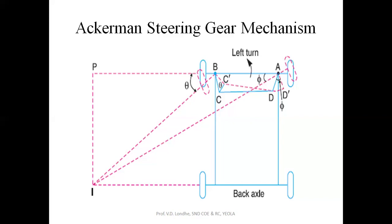The basic condition of the steering gear system for proper turning and to avoid skidding is the same: both center lines of the front and rear axle wheels should meet at one common point. If this does not happen, the vehicle will skid or be thrown outside the track — it will leave the track. This is the positive point of the Ackermann steering gear mechanism system as compared to the Davis steering gear mechanism system. Thank you.